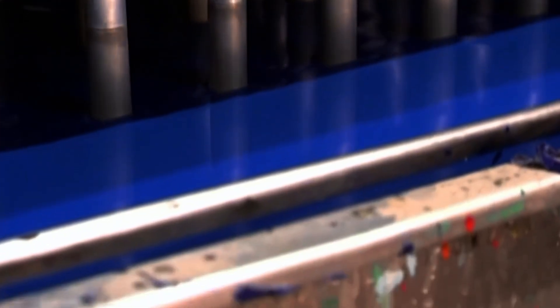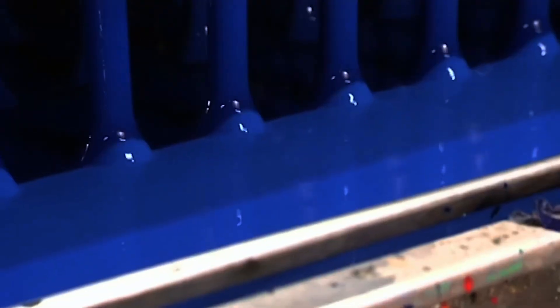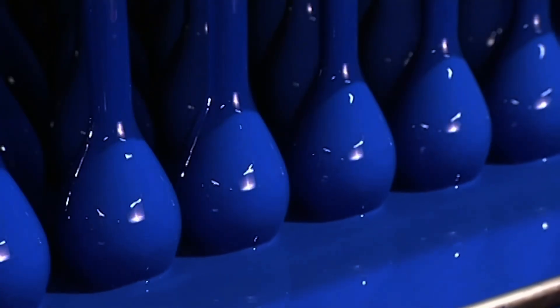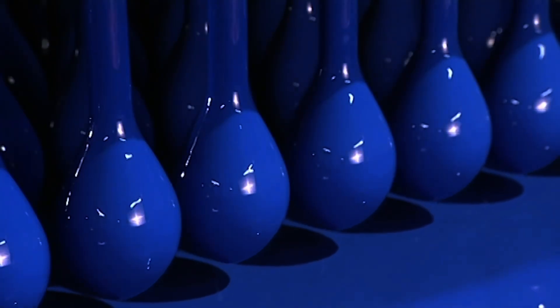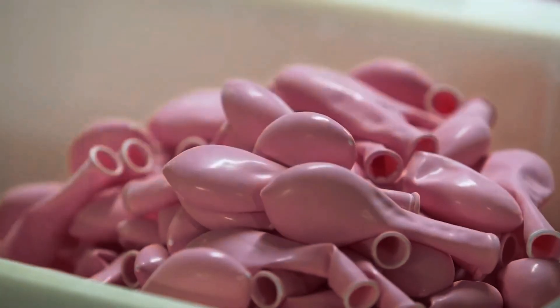After this step, the molds move to a brushing station. Spiral-shaped rotating brushes, like tiny whirlwinds of bristles, gently roll the bottom part of the balloon. This forms the nozzle, that small flap where air or gas is blown in. Without this detail, the balloon couldn't be inflated or sealed.